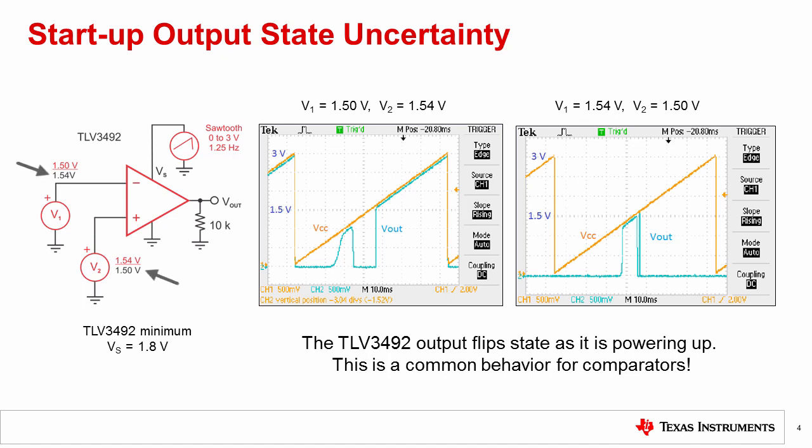For the second case, shown in black, the inverting input voltage is higher than the non-inverting input voltage. In this case, the expected output is logic low, but the actual output briefly transitions to logic high as the supply ramps up. This uncertain startup behavior is not unusual and can be observed in many comparators.